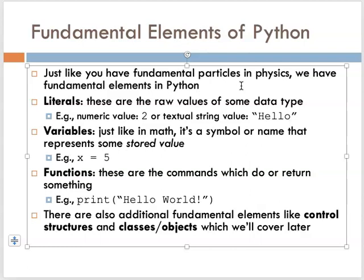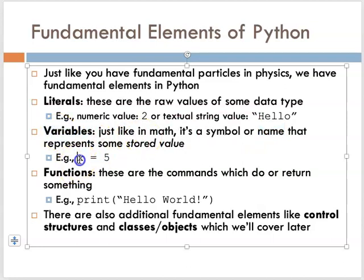We can identify three fundamental elements. One of them is literals — these are the raw values of some data type. You might have a literal numeric value like the value 2, or a literal text value, a string value, like 'hello'. Then you can use these values and associate a symbol or a name with them, just like in mathematics where you have variables. For example, the variable x, and you can assign it some value — in this case, the value 5 is assigned using the assignment operator to the variable called x, which serves as a placeholder for that value subsequently.